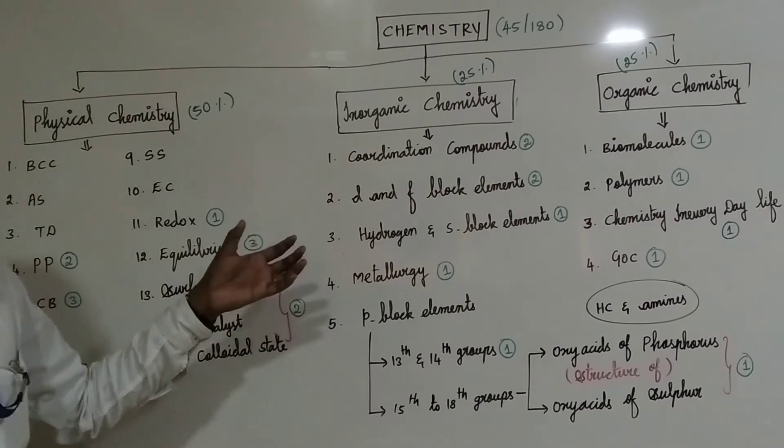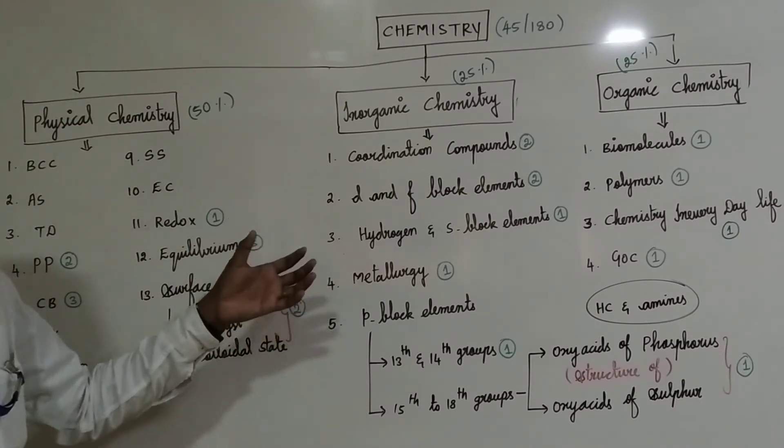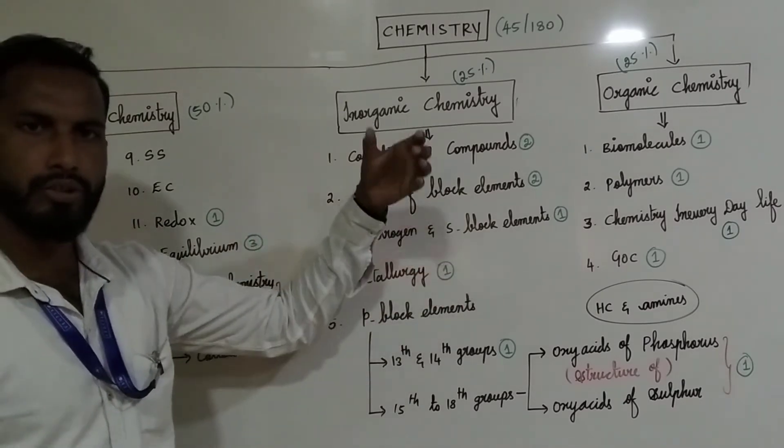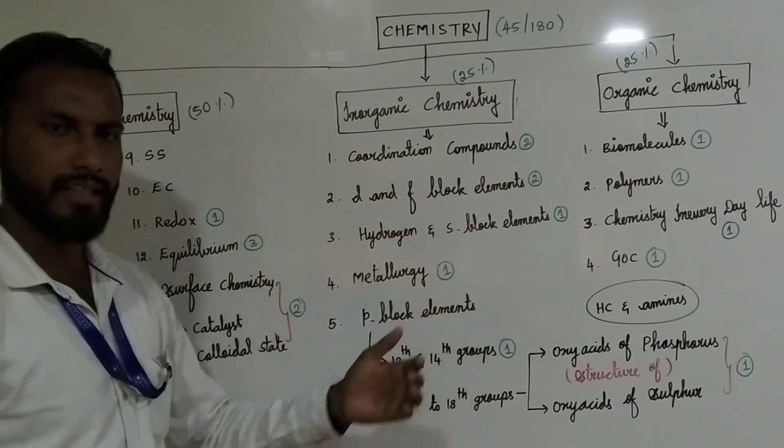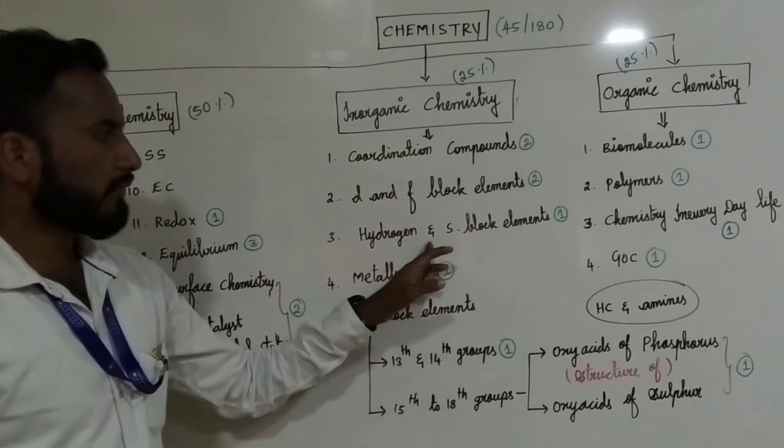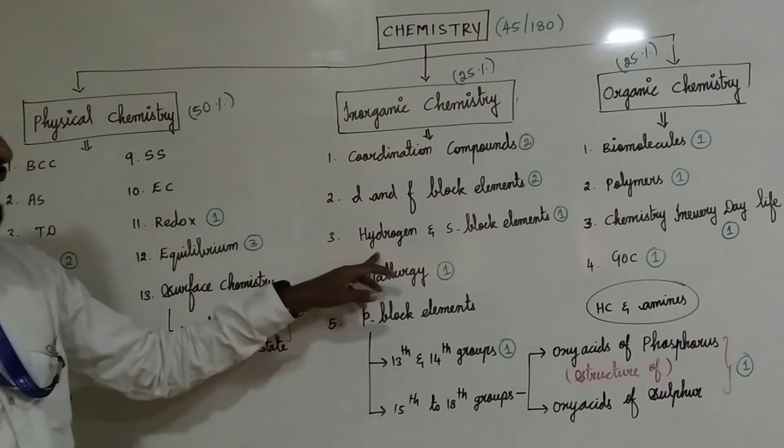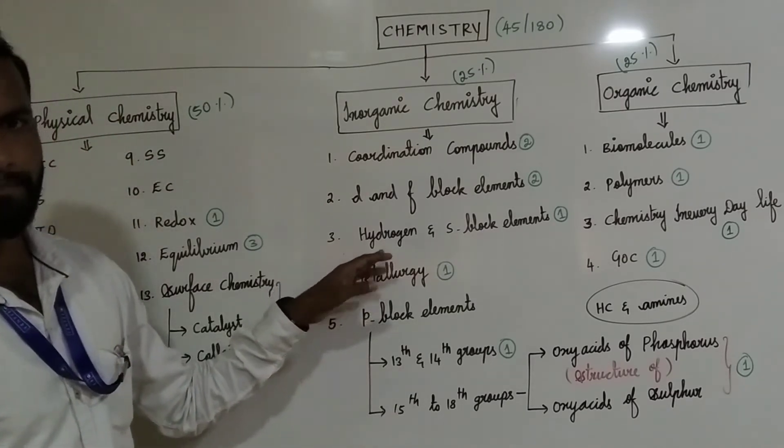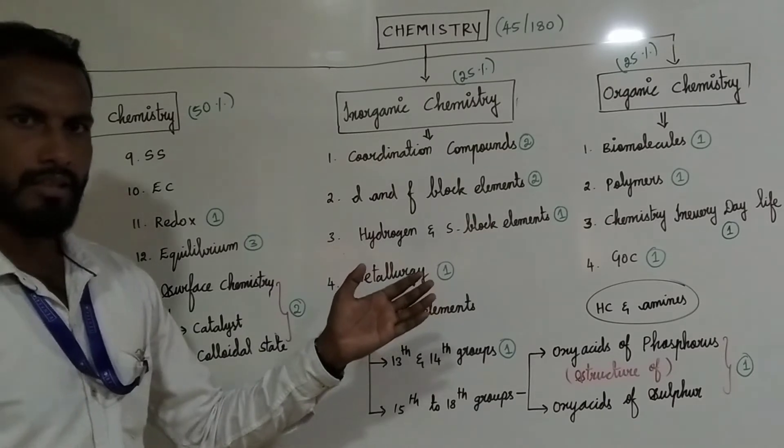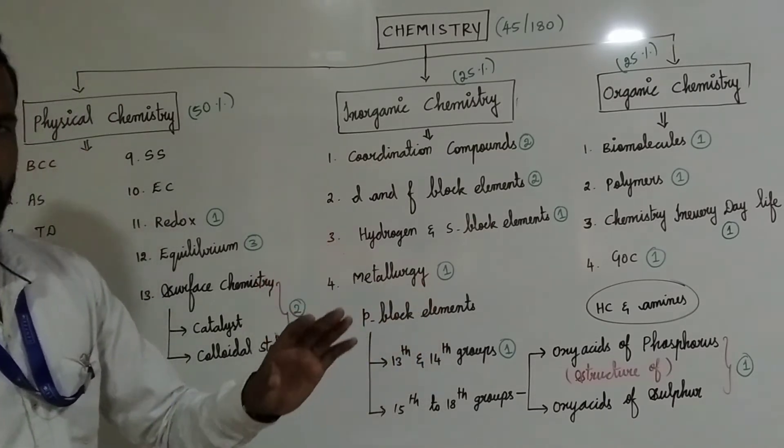Ionization energy, basic nature, metallic nature. So what is the ground-up group? Ionization energy, lattice energy. Physical properties are the S block limit. Ionization energy is covered in the water. So what is the problem with the water? I am talking about the soft water and hard water.